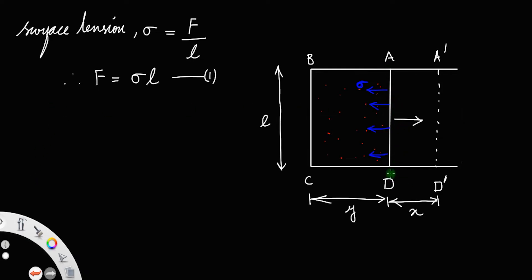Now this rod AD is moved to a new position A dash D dash. Therefore, the work done is equal to force into displacement. Here the displacement is DD dash. So the work done is equal to sigma L times x, which equals sigma L x.